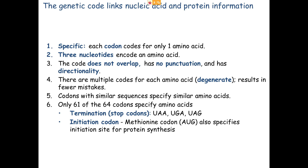Besides stop codons, we have an initiation codon or start codon — almost always the same, though it varies a little by species. It's generally the codon that codes for methionine: AUG. Sometimes you may see this written ATG — that's not a codon, there are no T's in mRNA. When people say ATG is a start codon, they're referring to the DNA coding strand that held the information to make that mRNA. The codon is the mRNA's code, AUG; the DNA coding strand would read ATG.